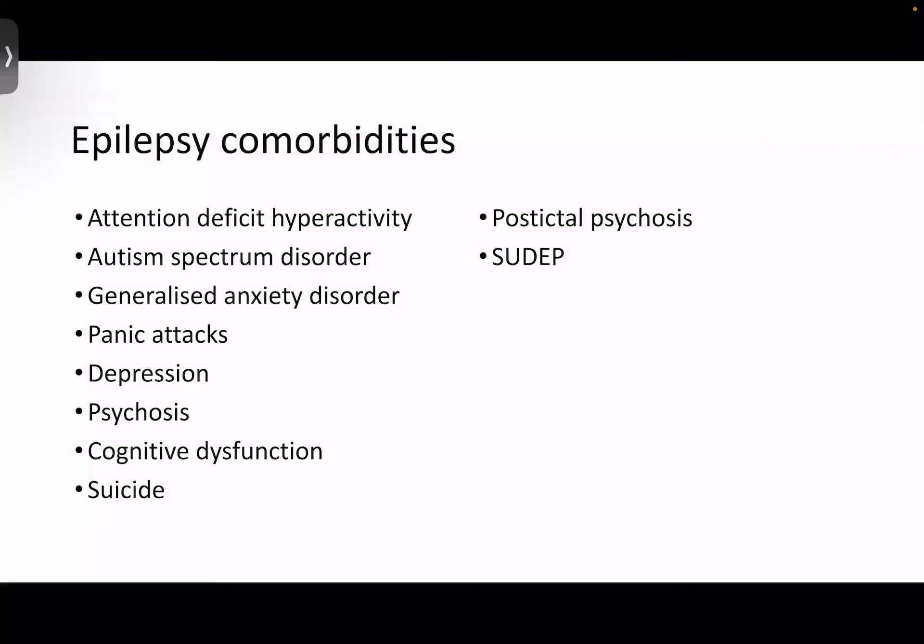Epilepsy patients will often have other comorbidities. Most common are attention deficit hyperactivity disorder, autism spectrum disorder, generalized anxiety disorder, panic attacks, associated depression, psychosis, subtle cognitive dysfunction, or frank intellectual disability. They are at higher risk of suicide than the general population, and patients may present with post-ictal psychosis. There is also sudden unexpected death in patients with epilepsy.